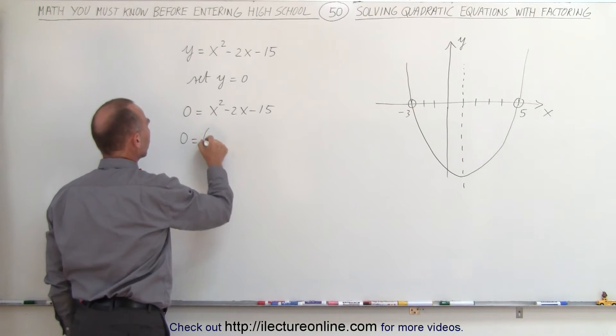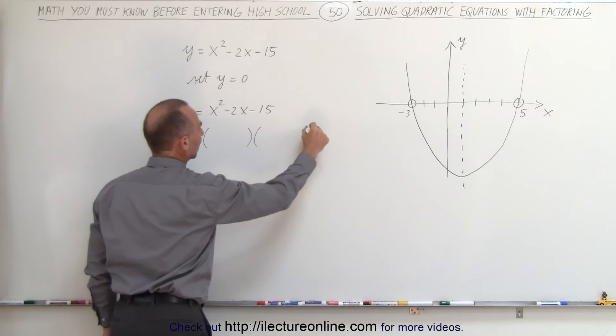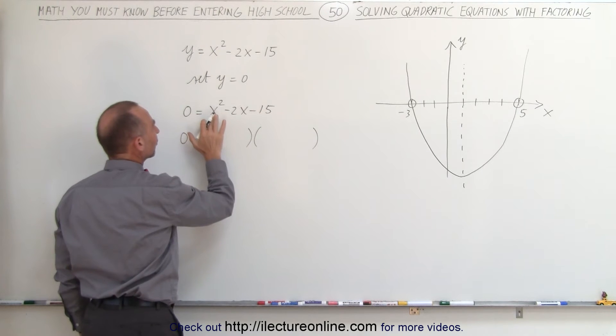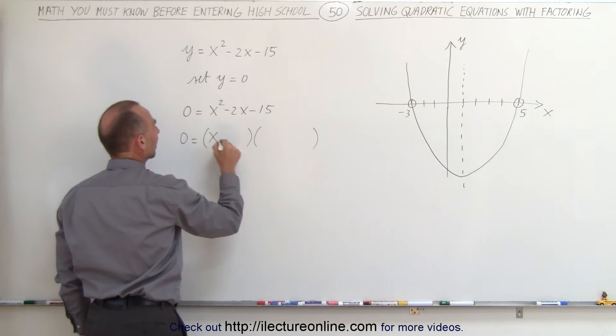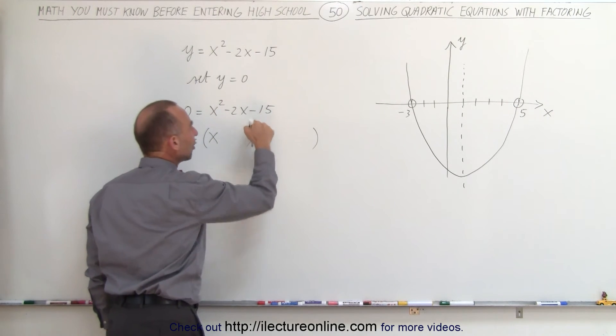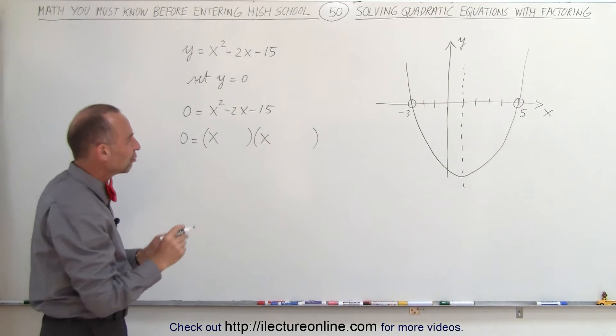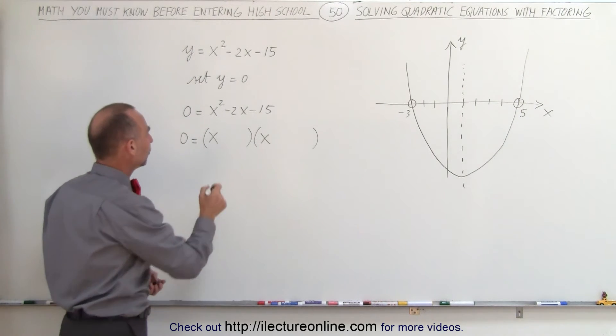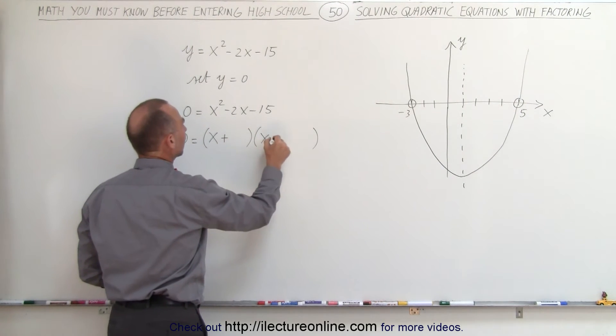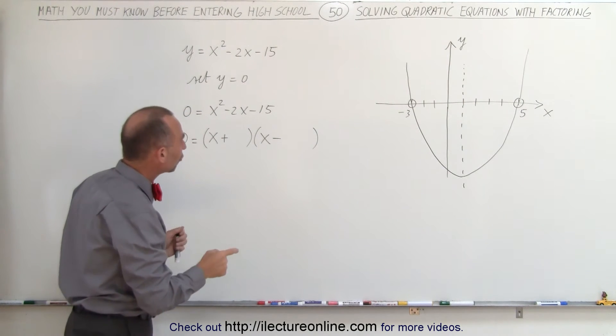So 0 is equal to two parentheses like this. Since we have a 1 in front of the x-squared, we can write x and x. The last number here is a negative number, which means the signs are positive and negative. So let me put a positive here and a negative there.